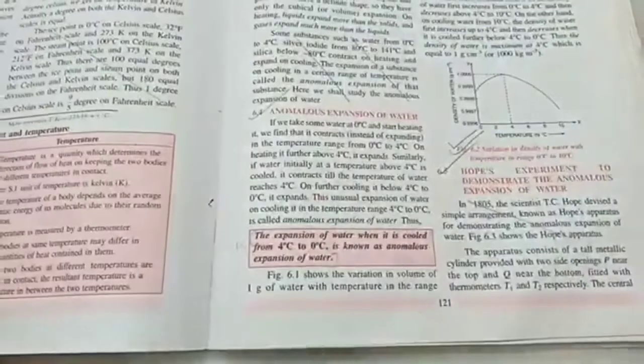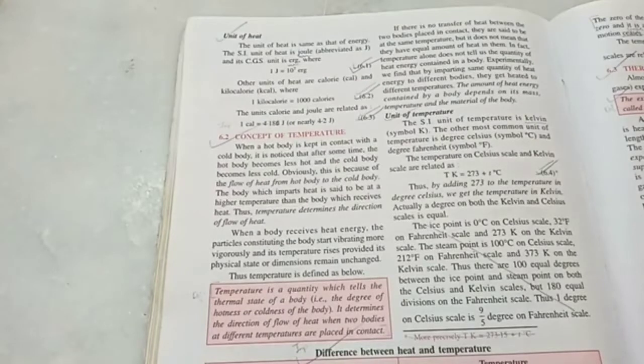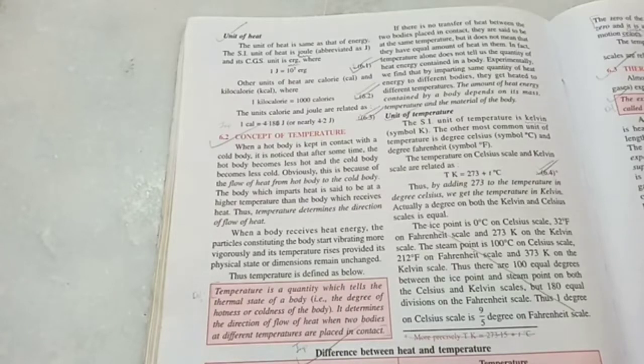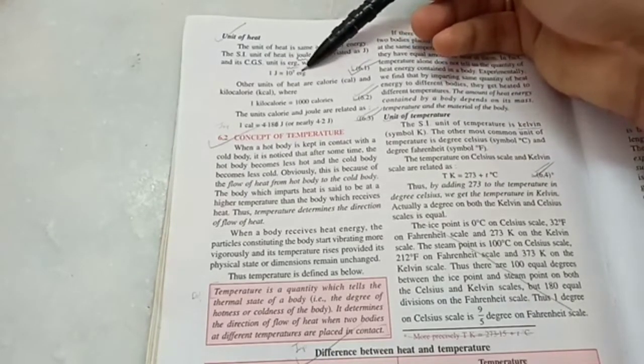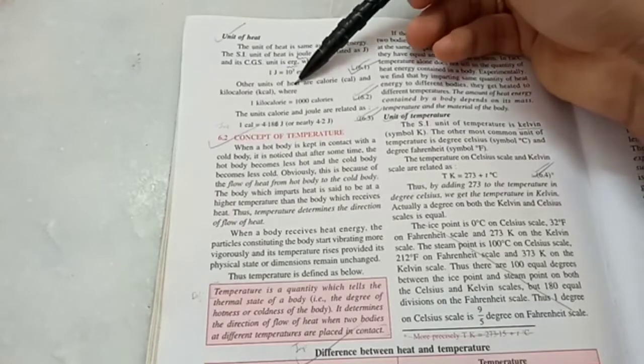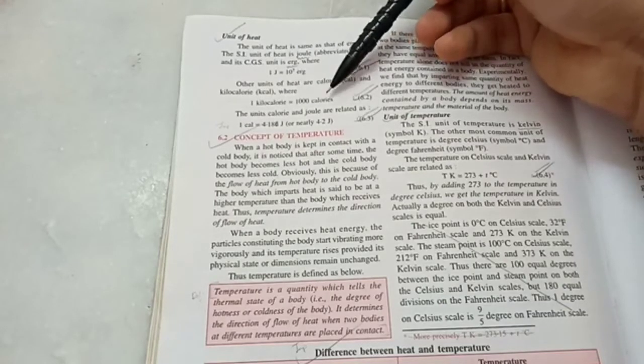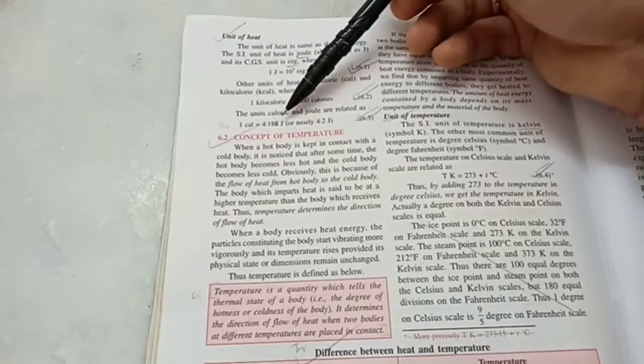So when we touch a hot object, we feel the heat, because that heat energy, the kinetic energy, is getting transferred to our skin, and we perceive it. So clearly, heat is indeed a form of energy. So it is measured in the SI unit of Joule, which is equal to 10 raised to 7 erg in the CGS unit. Another unit, especially for heat energy, is calories. One calorie is 4.18 Joule.